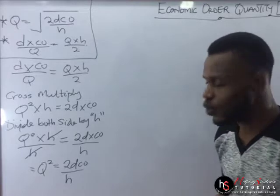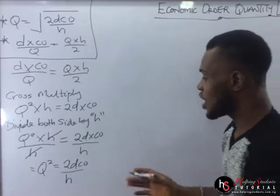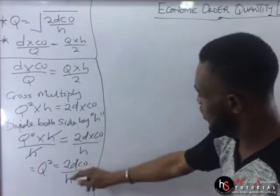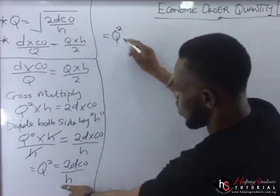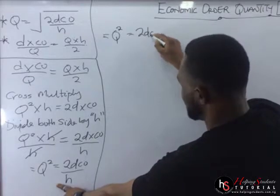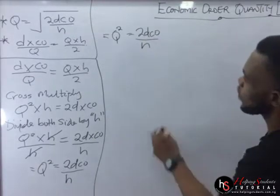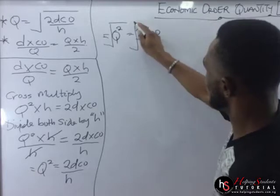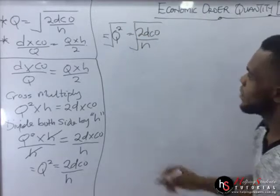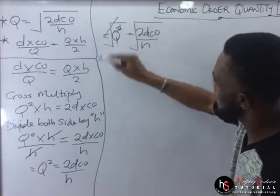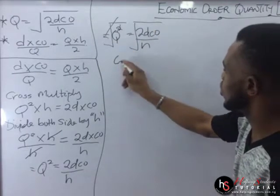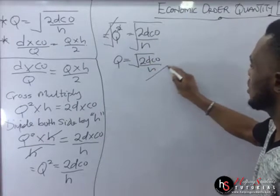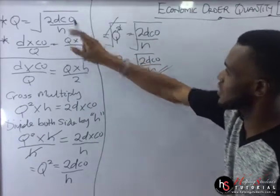So the next thing we'll do is eliminate the square sign. In order to do that, we're going to take the square root of both sides. We'll have Q squared equal to 2DCO over H. We square-root both sides — the square root cancels the square, and we're left with Q, which is equal to the square root of 2DCO over H. And this is the EOQ — you can see it is the same thing we had at the start.